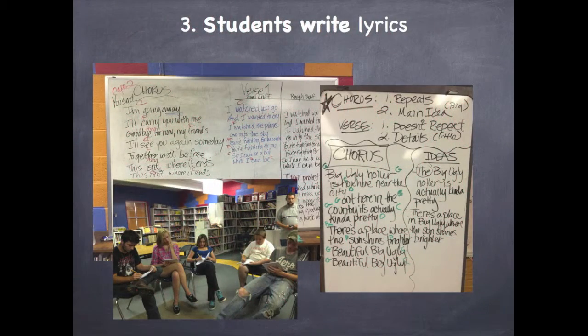The next part of the process involves taking all of these brainstorm thoughts and working together to turn them into actual lines or lyrics for the song. This is also when we discuss structural parts of a song, like the chorus and the verse, as well as the differences between a main idea and supporting details.